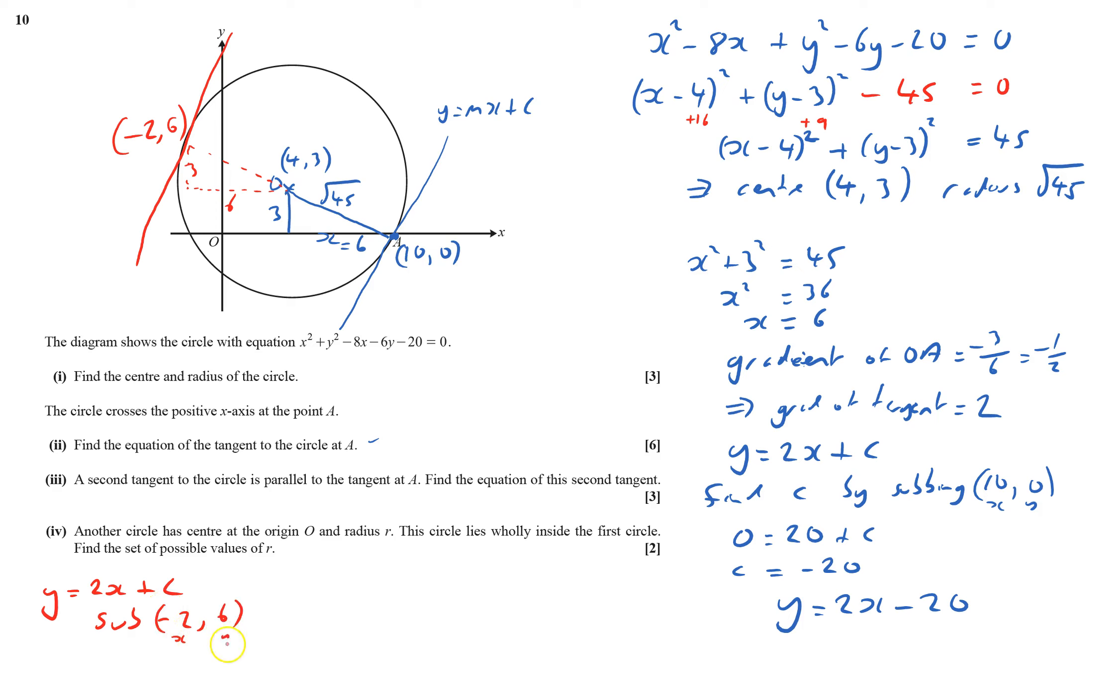x is -2 and y is 6. So 6 equals 2 times negative 2 plus c, which is negative 4, so c equals 10. We get y equals 2x plus 10 for part three.